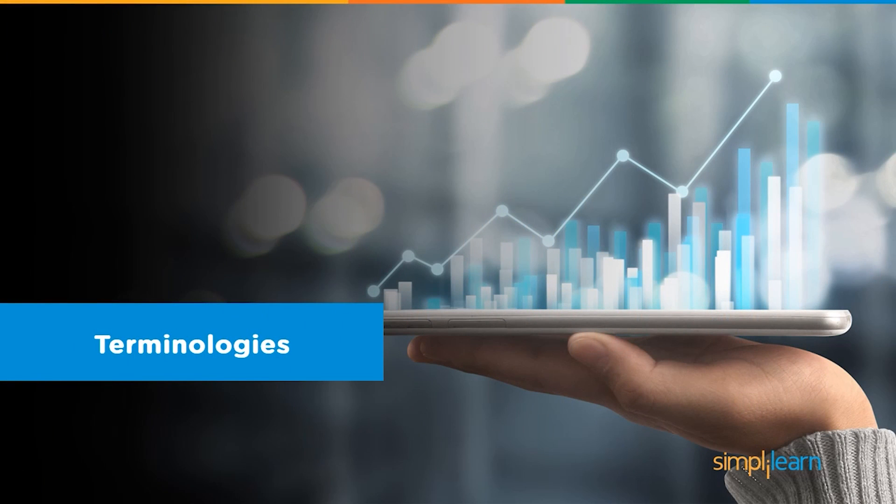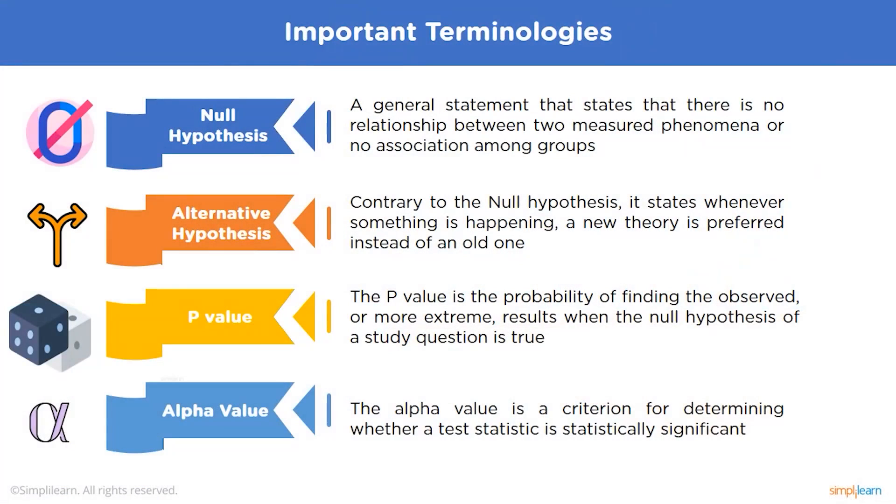Now, let's discuss some key terminologies used in ANOVA. We will start with a null hypothesis. The null hypothesis is the assumption that an event will not occur. A null hypothesis has no bearing on the study's outcome unless it is rejected. Alternative Hypothesis: The alternative hypothesis is the logical opposite of the null hypothesis. The acceptance of the alternative hypothesis follows the rejection of the null hypothesis. H1 is the symbol for it.